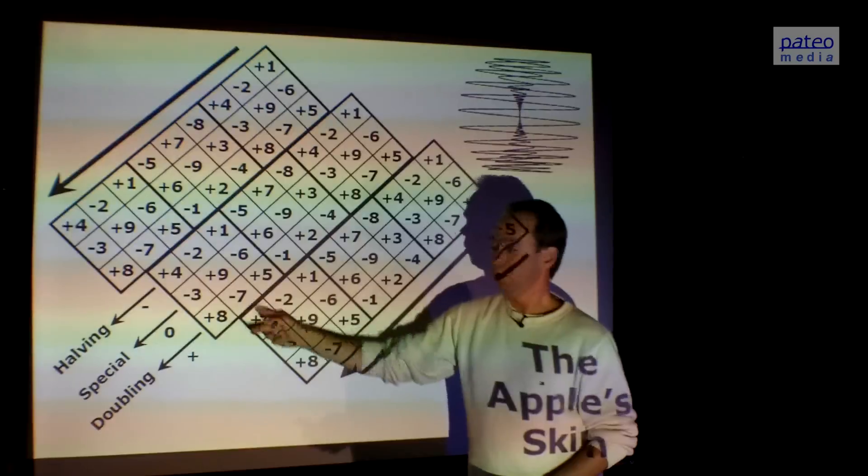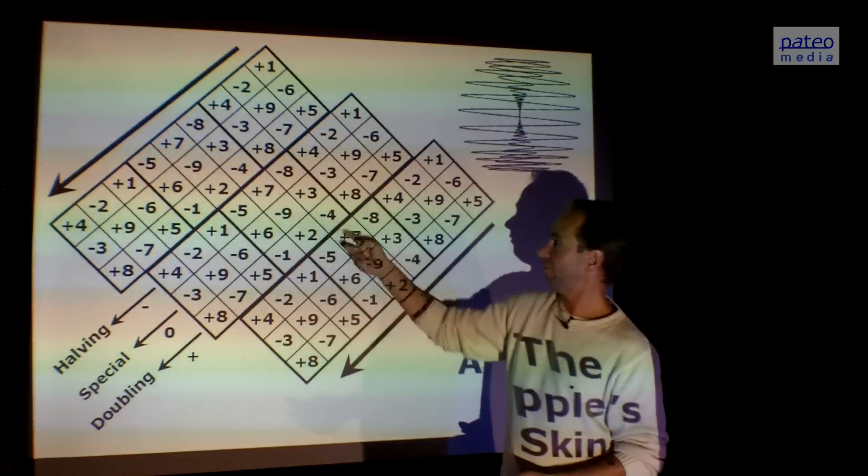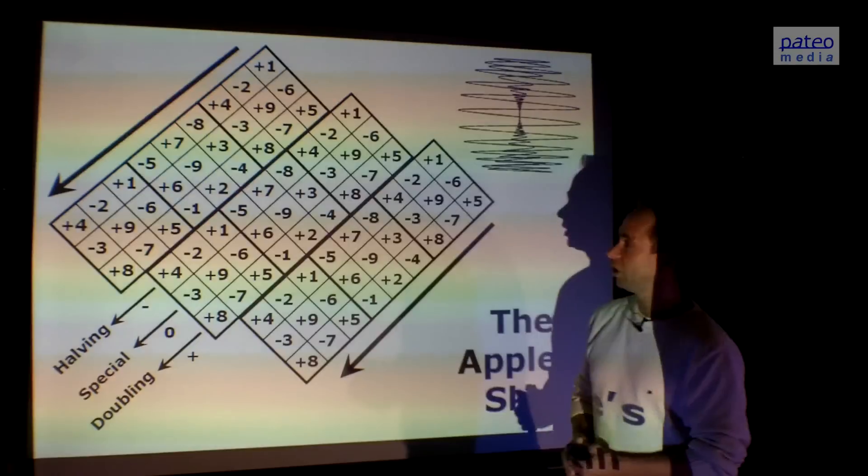The four and the seven always meet up. Those are the reciprocals. The two and the five always meet up. The one and the one. The two and the five. The four and the seven. They're always connected in the same way.